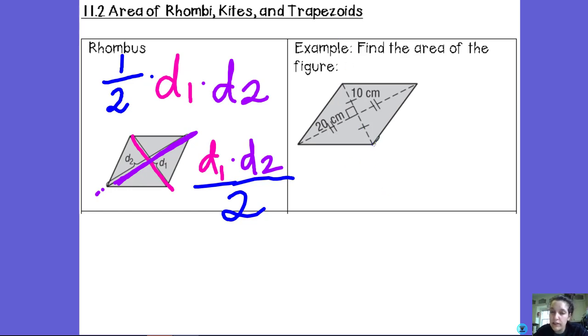So in our example, find the area of this rhombus. Well first off, we know it's a rhombus because the diagonals are bisecting each other, that makes it a parallelogram, and the diagonals are perpendicular, so it makes it a rhombus.